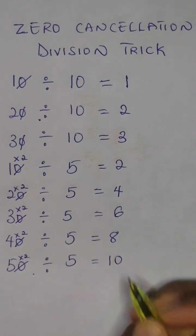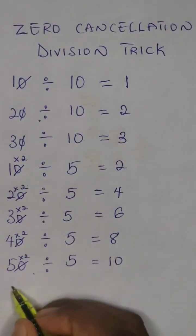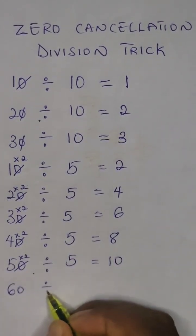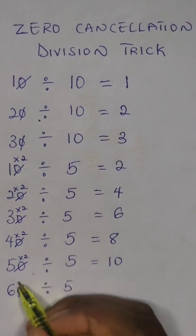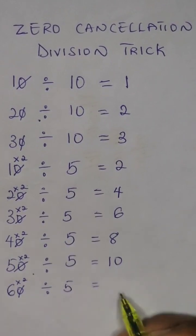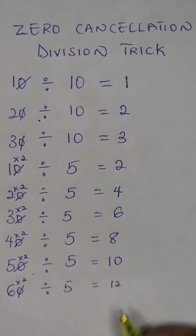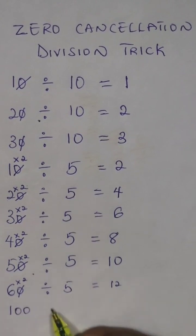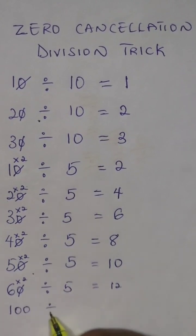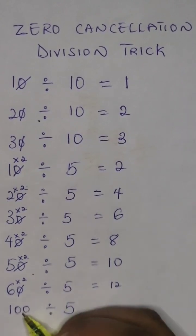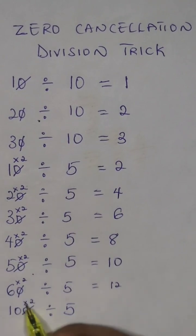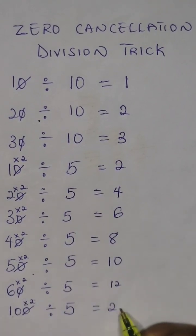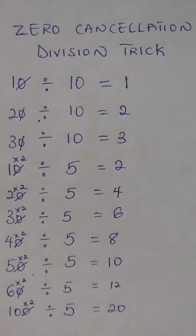We can continue: 60 divided by 5 — cancel out the zero, times 2: equal to 12. 100 divided by 5 — cancel out the zero, times 2: we have 10 times 2 equal to 20.